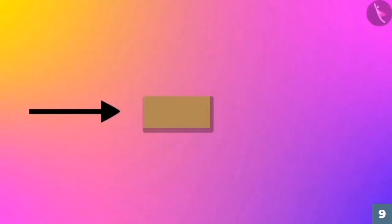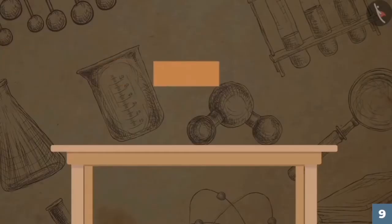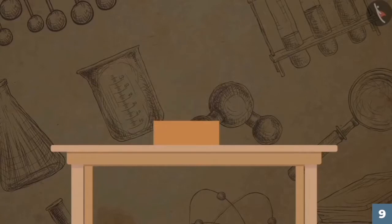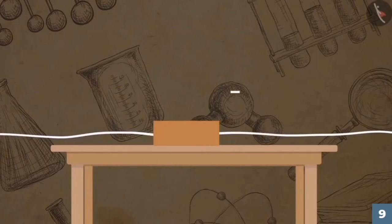Let us perform a simple activity and derive the mathematical formula for work done. Take a wooden block and place it on a table. Let a constant force F be applied on the wooden block. Let the wooden block displace through a distance S in the direction of force.